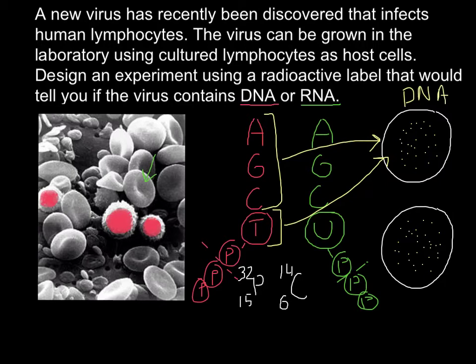If our virus is a DNA virus, it is going to incorporate thymine — which is radioactive. For the second plate, we add the same three non-radioactive bases shared with DNA, and one radioactively labeled base: uracil. If the virus is RNA-based, it is going to incorporate uracil.